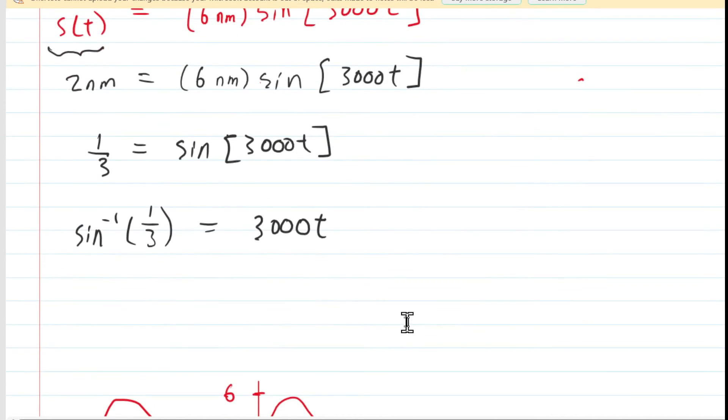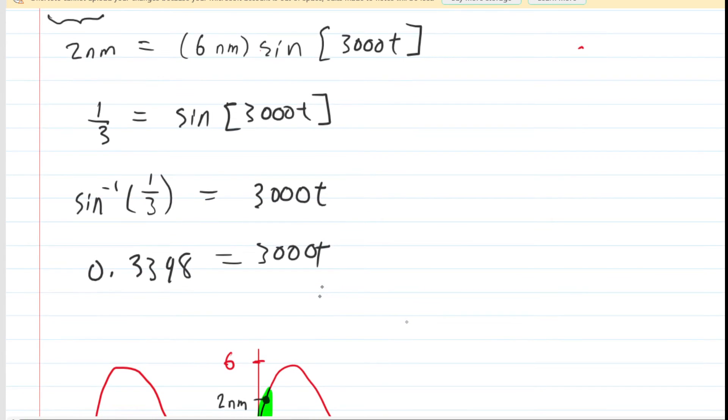So you want to pick up your calculator and make sure it's set to radian mode, and then take the inverse sine of 1 third, and you would end up with approximately 0.3398. That's equal to 3000t, and then just divide both sides by 3000. Now you're going to get a tiny number. This is going to be the number of seconds, and it looks like it's about 1.13 times 10 to the minus 4 seconds.